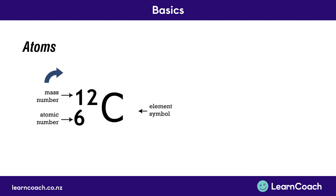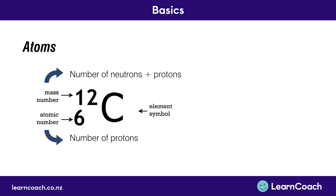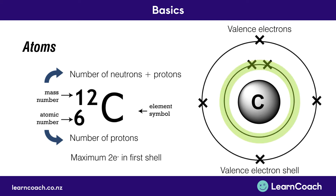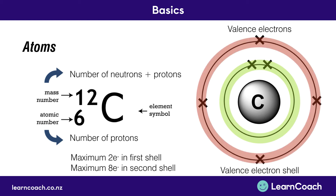Now we'll look at carbon. Carbon's mass number is 12, which is the number of protons and neutrons. Its atomic number is six, which is the number of protons, so we know there are going to be six electrons around carbon's nucleus. The maximum of two electrons goes in the first shell, so that's already full, and the remaining four electrons go into our valence electron shell. With only four electrons in the second shell instead of the maximum of eight, this isn't fully stable. So carbon needs to gain more electrons to reach eight electrons in the second shell.